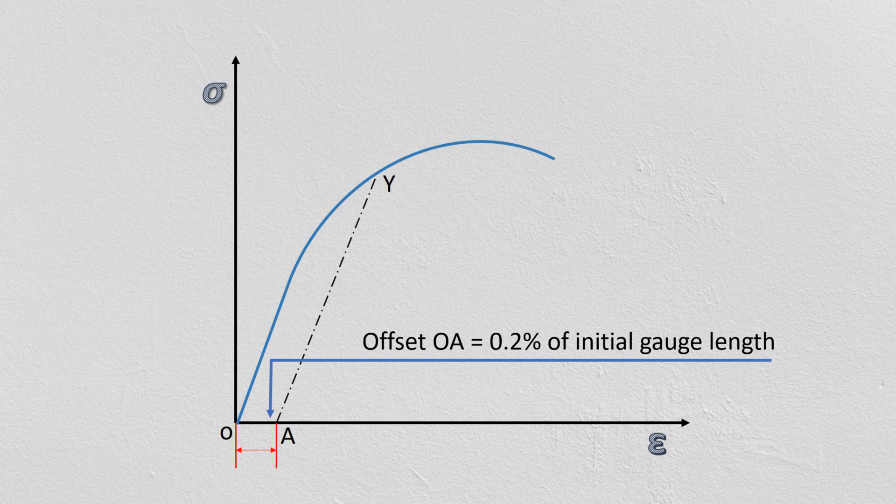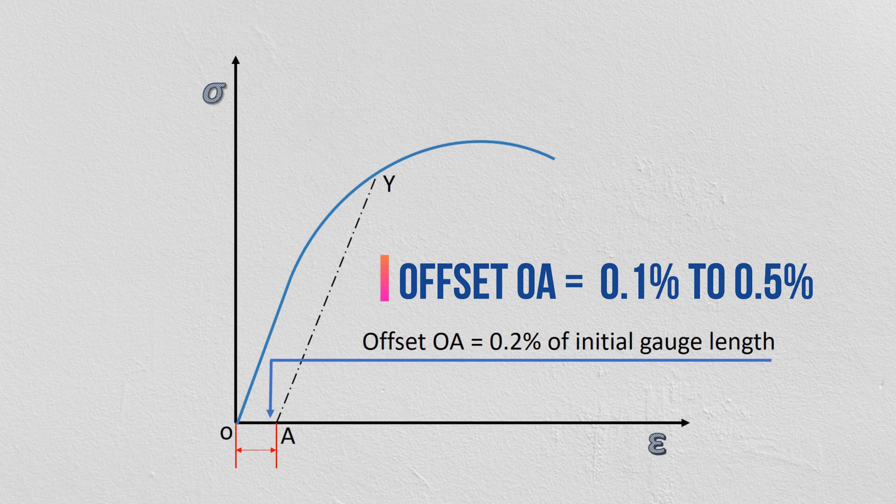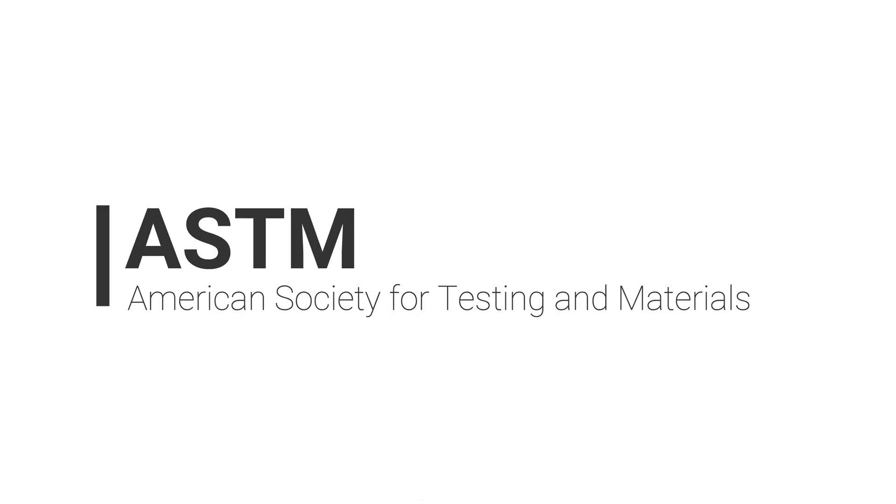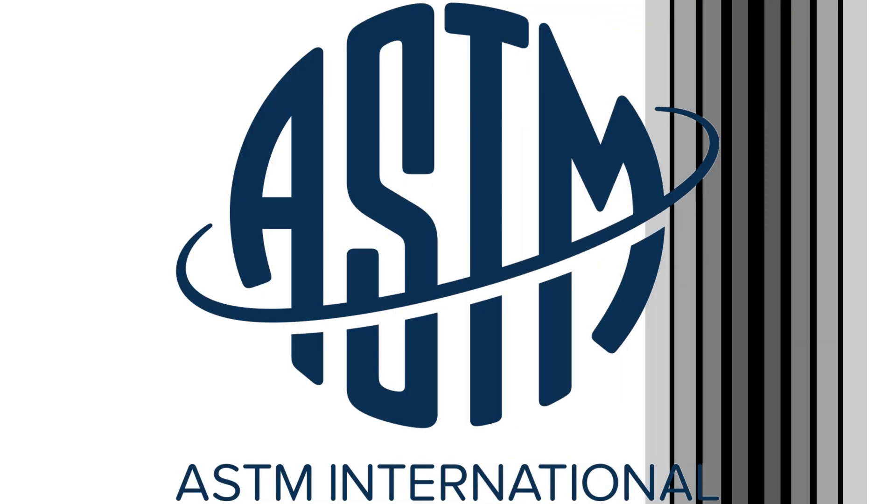Proof strength or proof stress is determined by offset method as explained earlier. However, the offset may vary from 0.1% to 0.5% of original gauge length. The value of the offset percentage of strain is defined by the material testing standard being used like ASTM or ISO.